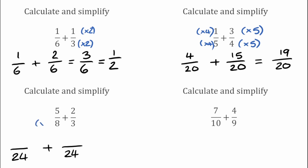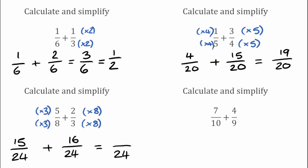To turn this 8 into 24 we'd have had to multiply it by 3, so we're going to have to do the same to the top: 5 times 3 gives 15, making that 15 over 24. For the 3, we'd have to multiply that by 8 to make 24, which means we do exactly the same for the top: 8 times 2 gives 16. So 15 over 24 add 16 over 24 gives us 31 over 24.